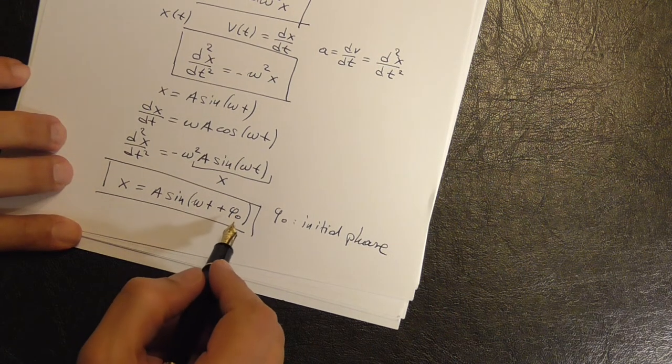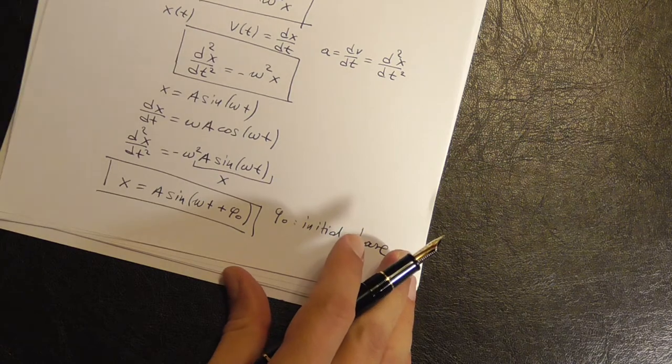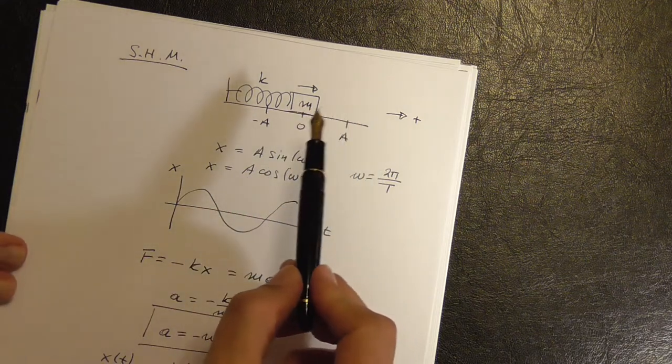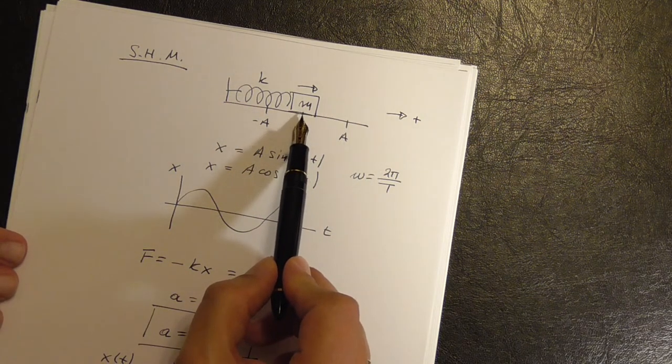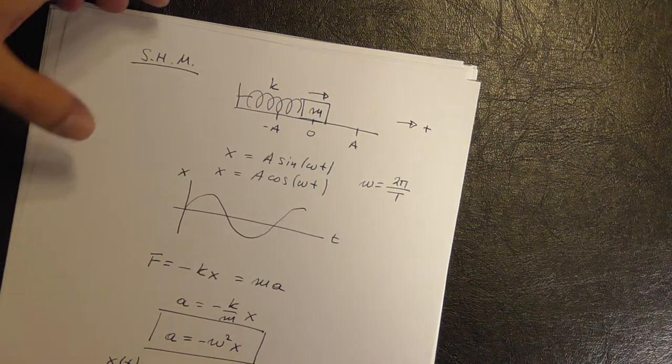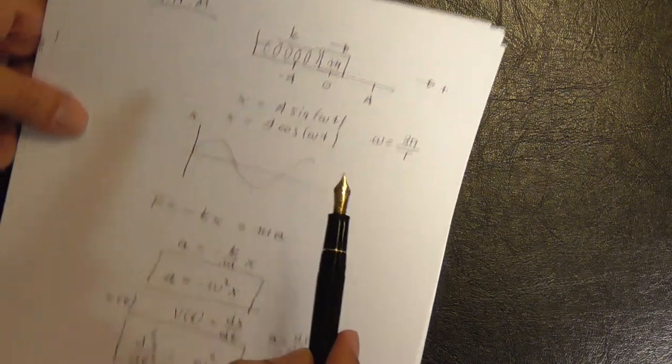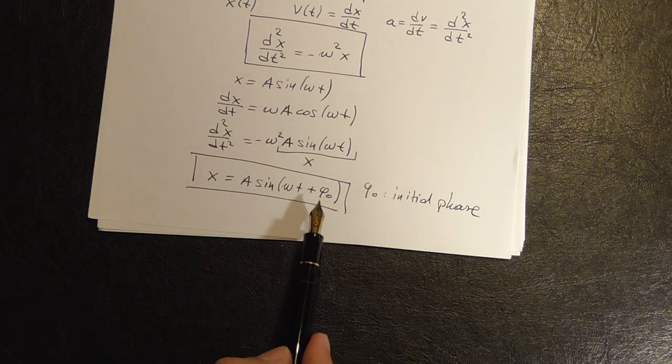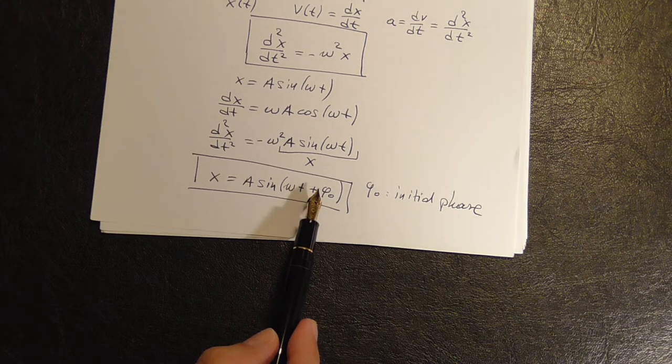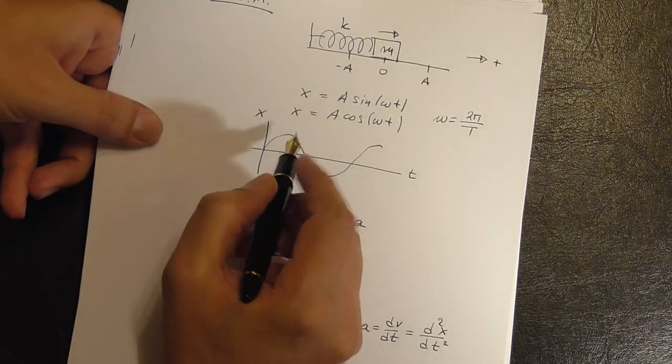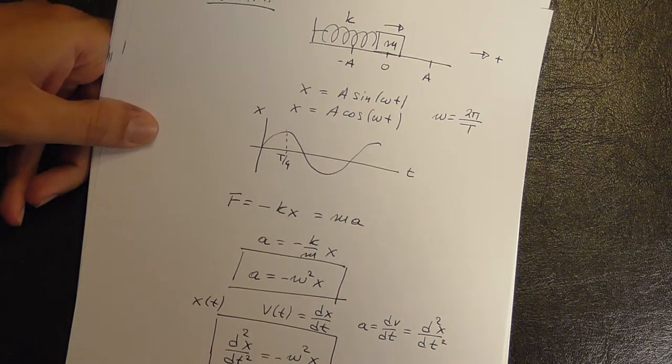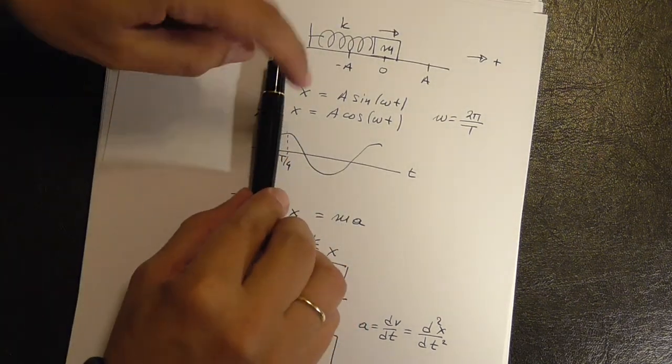So if phi 0 is 0, this means I'm back in this case where the body is at equilibrium position, moves to the right with the maximum velocity. So I'll get a sine function. If phi 0 is 90 degrees, then you know that the sine of omega T plus 90 degrees is equal to the cosine.